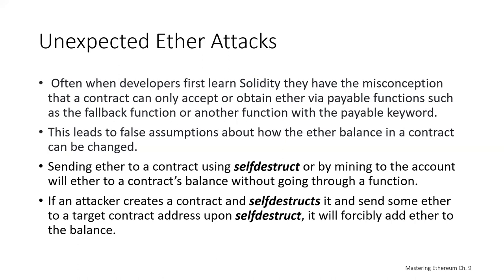The easiest way to send Ether to a contract is using the self-destruct function, or by mining and setting the contract address as the address to receive the mining reward. In either case, that Ether goes directly into the contract's balance — it doesn't go to a fallback function or any other payable function.